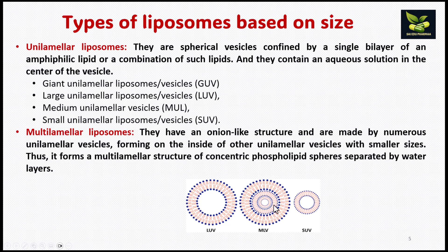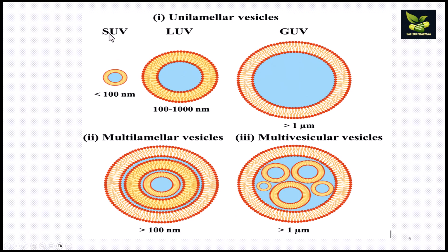Multilamellar liposomes have a structure like an onion and are made up of various unilamellar vesicles, with a central core and various layers on the outside. The SUV (small unilamellar vesicle) is less than 100 nanometers; the large one is between 100 to 1000 nanometers; and greater than 1000 nanometers is called a giant unilamellar vesicle. Multilamellar vesicles are generally more than 100 nanometers, and multivesicular vesicles are more than 1 micrometer.